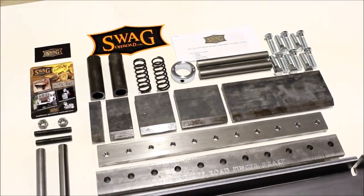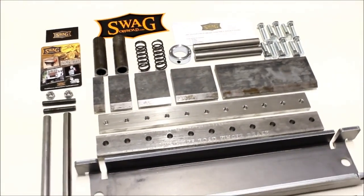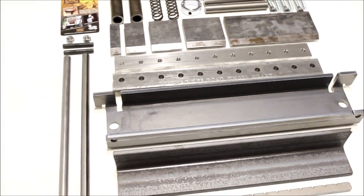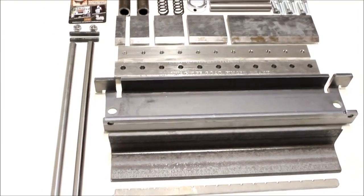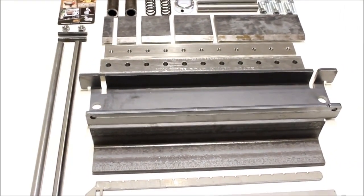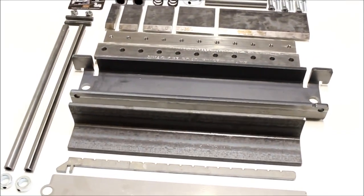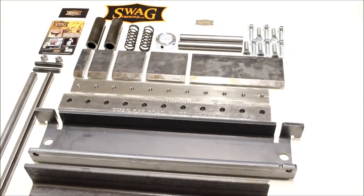Harbor Freight continually runs sales to where you can pick up the 20 ton H-frame press from them for around $150. Now, by the time you factor in your time, materials, energy of trying to source it, fabricate it, weld it, paint it, $150 is a phenomenal value.